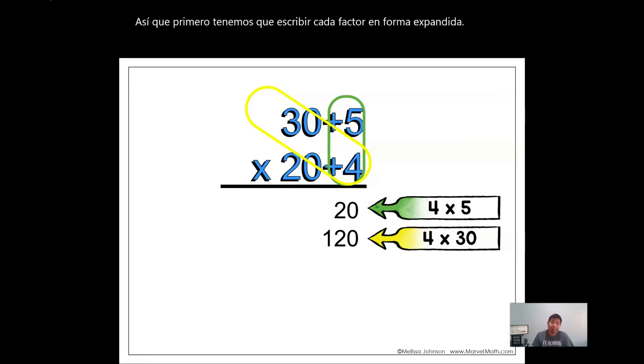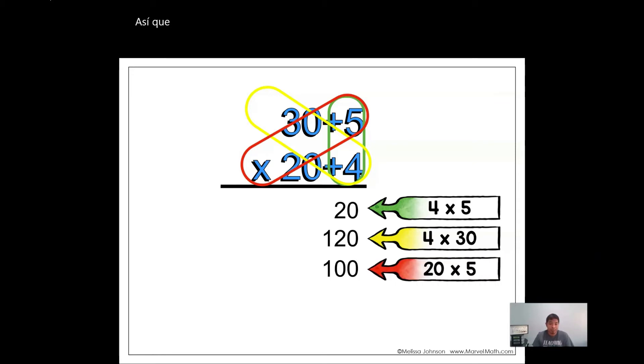Next we multiply the value of the 2, which is 20, times 5. Power of 10, which equals 100. Next we multiply the value of 3 and 2, which is 20 times 30, power of 10, which equals 600.